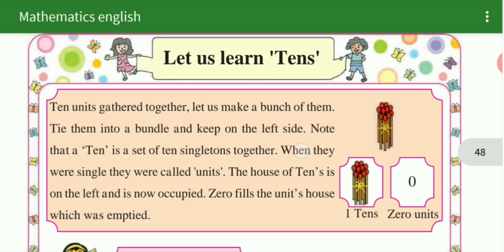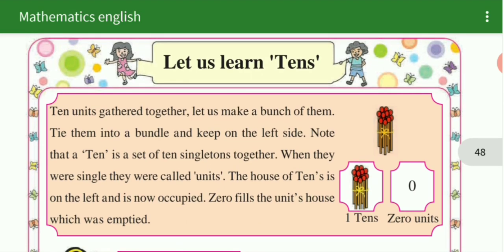Let us learn tens. 10 units gathered together, let us make a bunch of them. Tie them in a bundle, keep on the left side. Note that a ten is a set of 10 single tones together. Tie them into a bundle and keep on the left side.